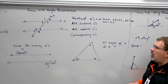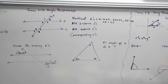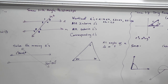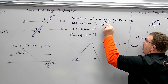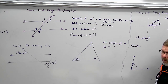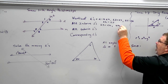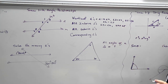Now we move to alternate interior angles. Alternate means opposite sides of the transversal. Interior means the angles inside the parallel lines. If I start with angle three, what would be its alternate interior angle? Six. So angle three is the same as angle six, and angle four is the same as angle five. They're opposite sides of the transversal and on the inside — interior angles.